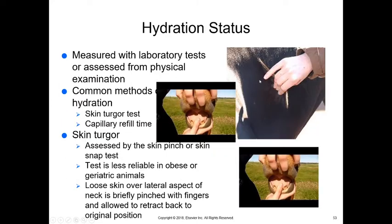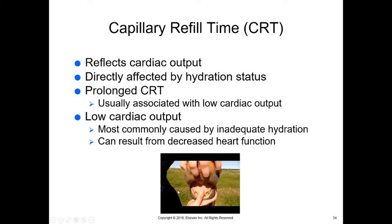For hydration status, we can perform a skin turgor test. If you pinch the skin and it doesn't snap right back into position, the animal is dehydrated. If it snaps right back, they're probably not very dehydrated. We also touch the mucous membranes and measure capillary refill time. The CRT reflects cardiac output — a prolonged CRT means low cardiac output, which can indicate inadequate hydration or decreased heart function.